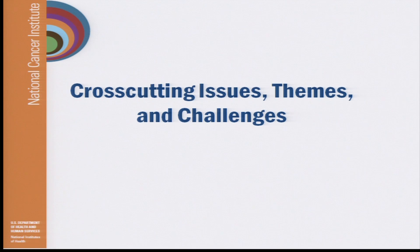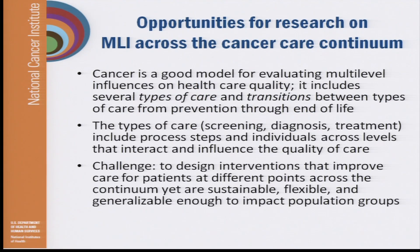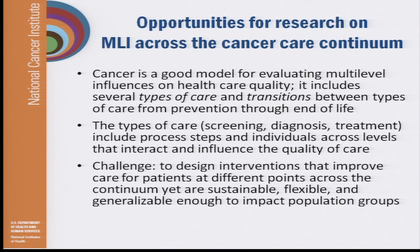Now to the cross-cutting issues, themes, and challenges presented in all the papers. First, it's important to point out the opportunities for research on multi-level interventions across the cancer care continuum and why cancer is a good model for evaluating multi-level influences. It includes several types of care, as well as transitions between types of care from prevention through end of life, which lets us look at contextual influences at these different stages. The types of care — screening, diagnosis, and treatment — include process steps within each stage, and individuals across the levels interact in different ways depending on where the person is in that stage of care.